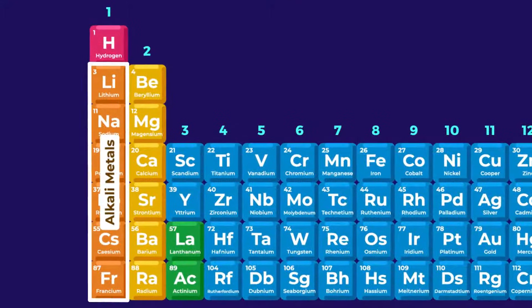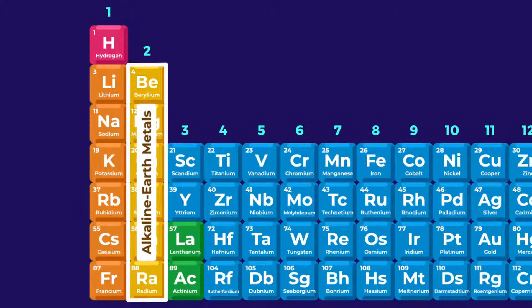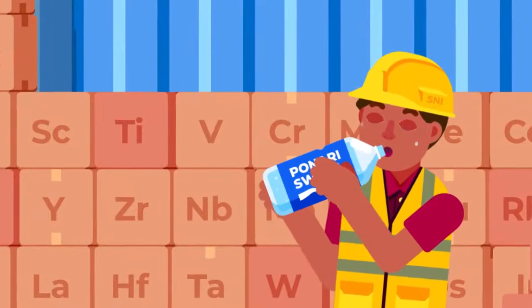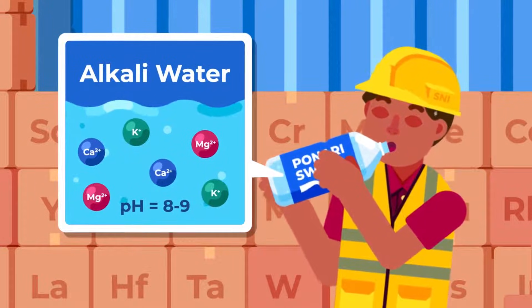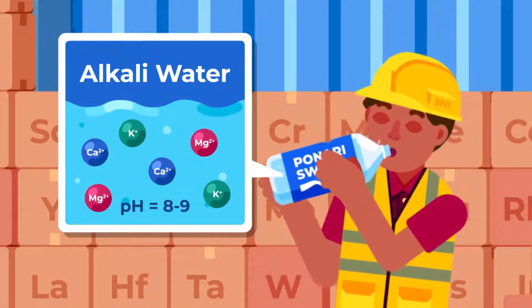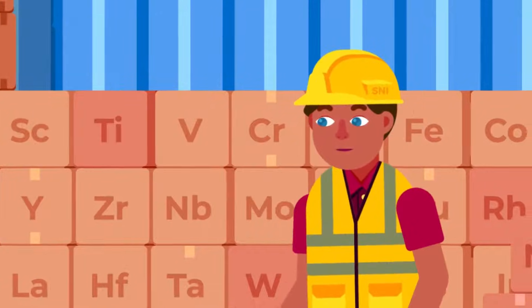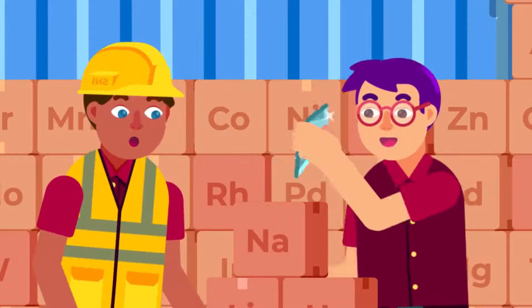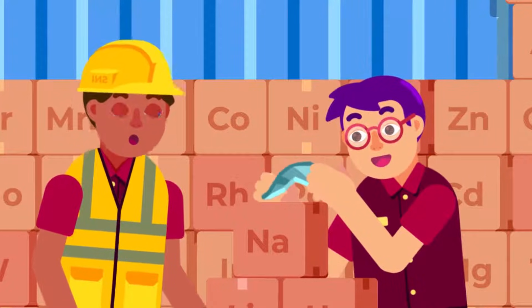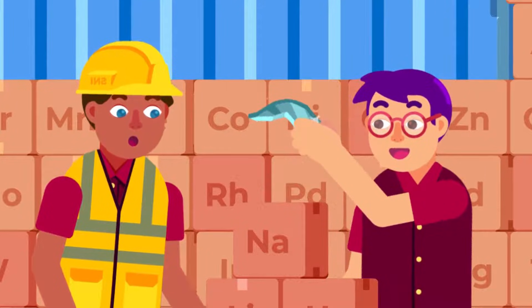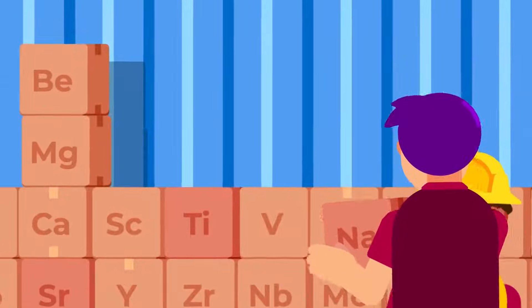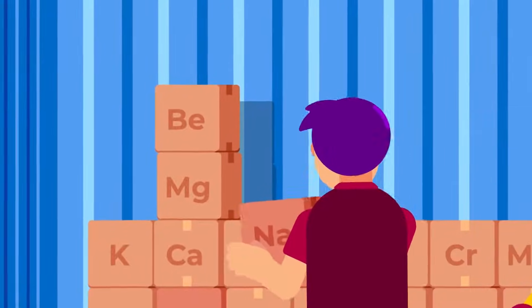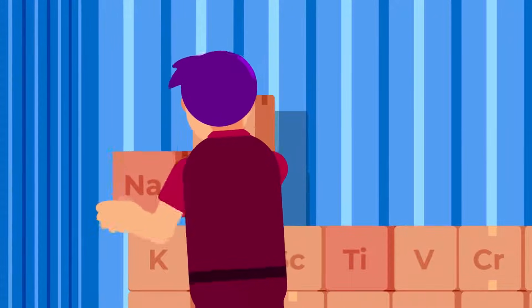Group 1 are called alkali metals, and group 2 alkaline earth metals. They are called alkali because they create an alkali solution when reacting with water. Alkali metals are shiny, soft, and more reactive than the elements in group 2. Both groups reside in the two leftmost columns of the periodic table.